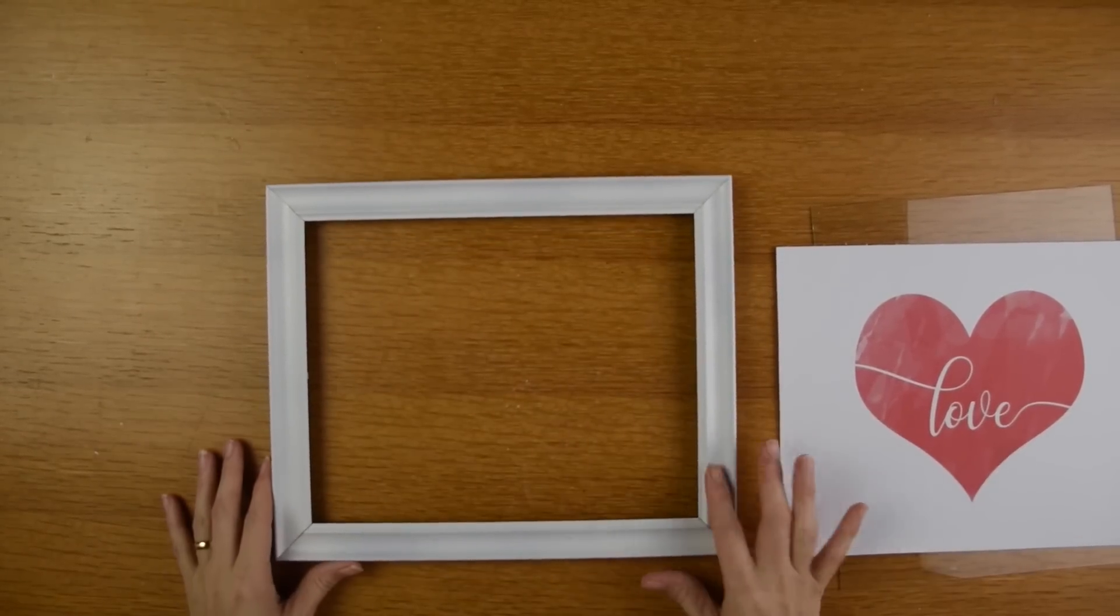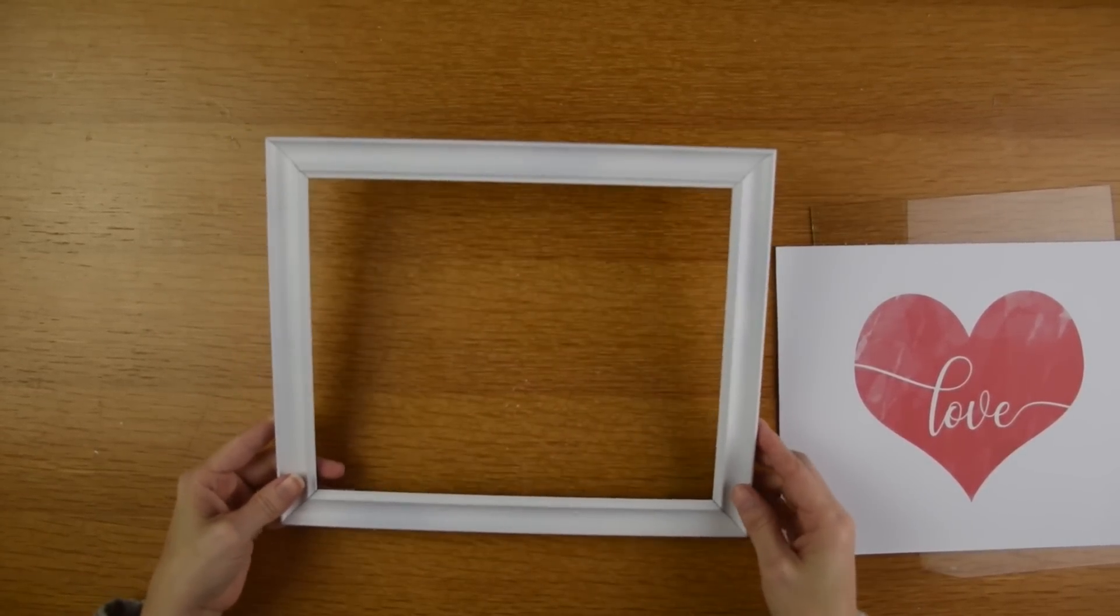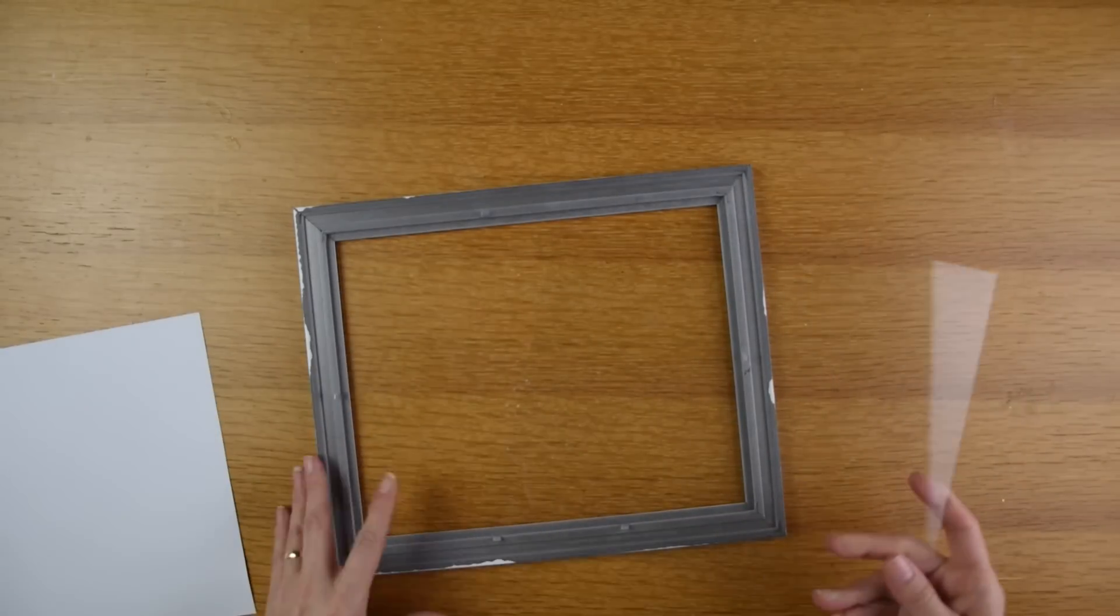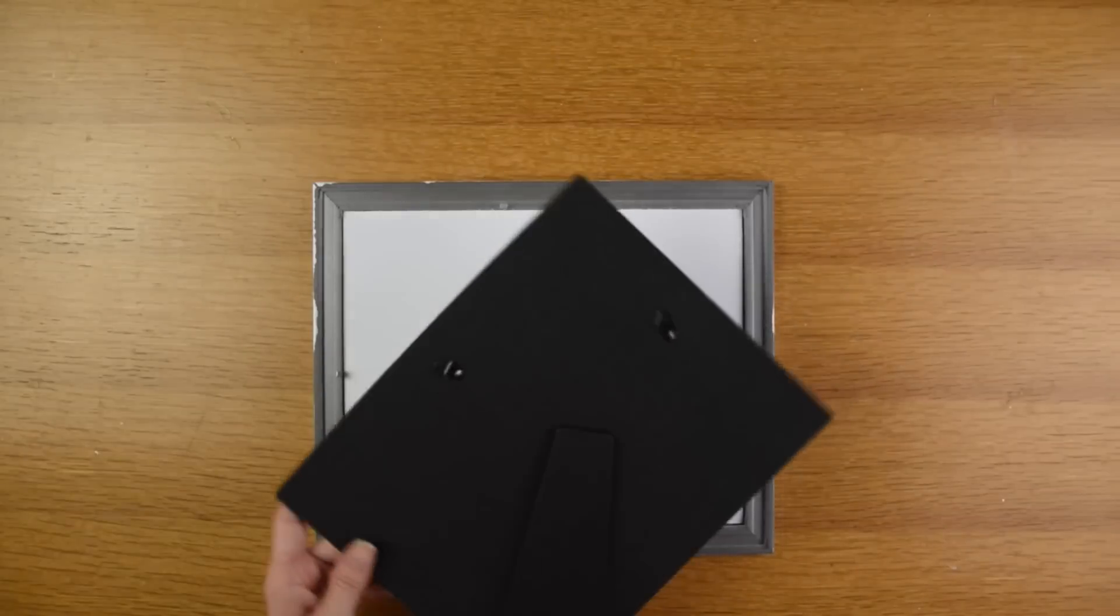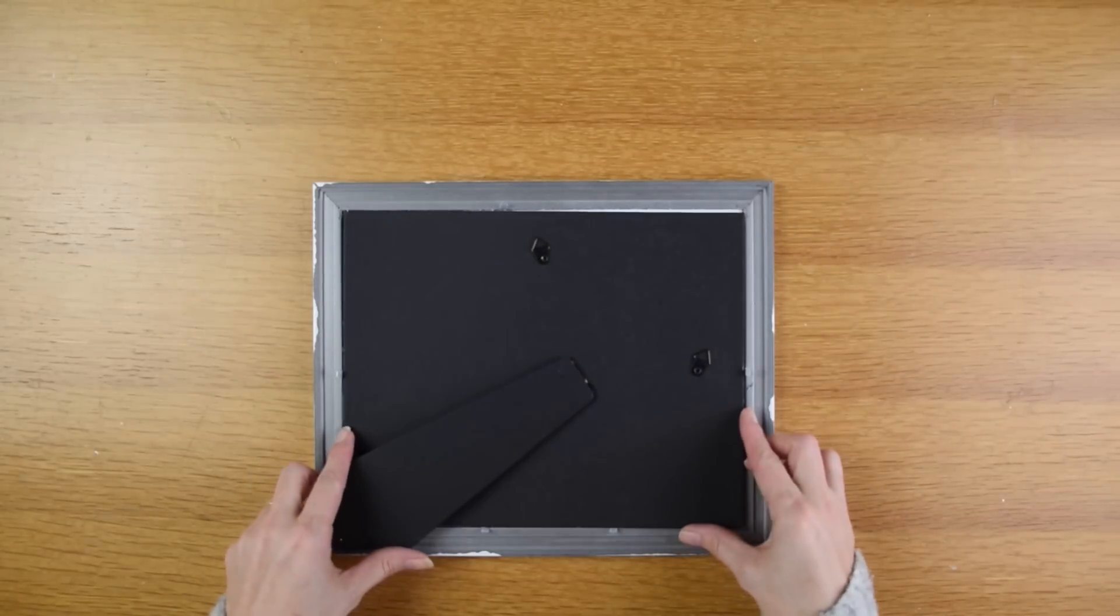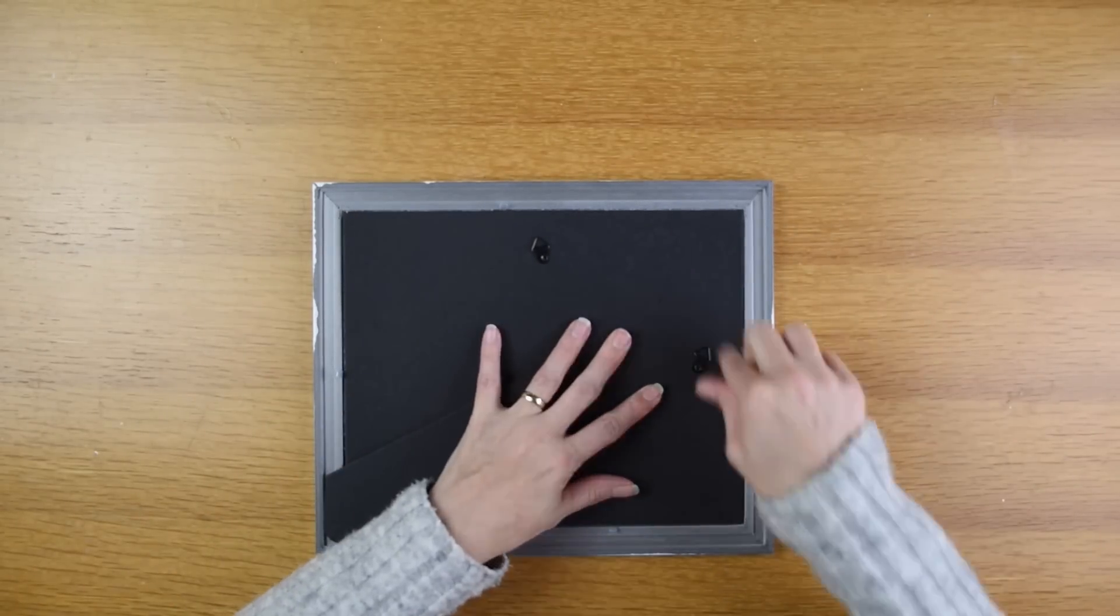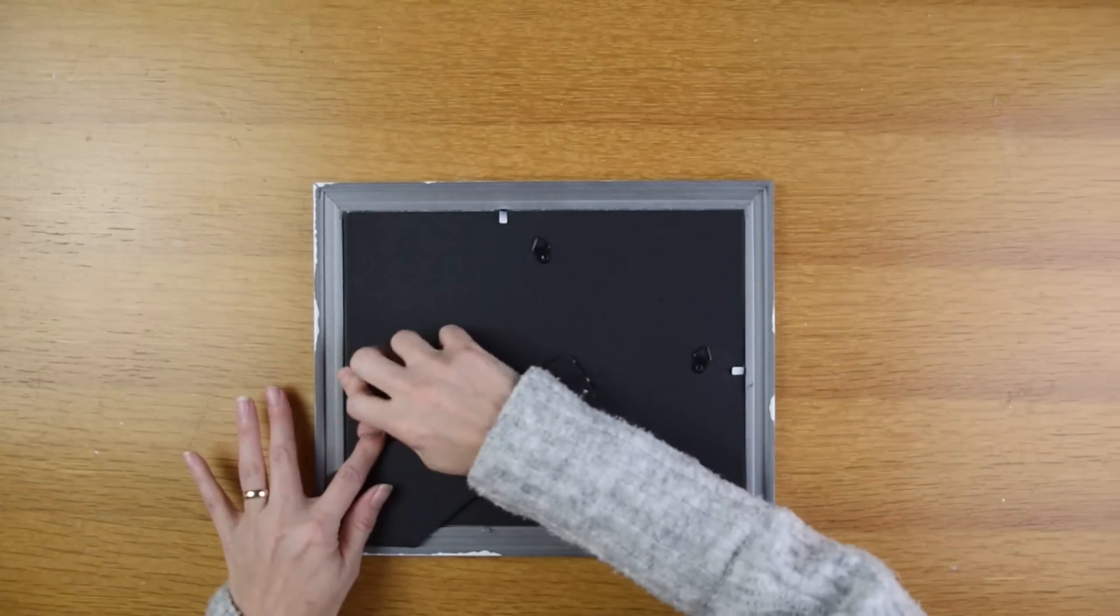Once my frame is dry I'm going to insert my image into the frame. I need to put the glass back in it and then I will put my image on top of the glass and then I will put the backing back on. And I really like this backing because you can either hang it or you can go ahead and sit it on a tabletop or bookshelf.